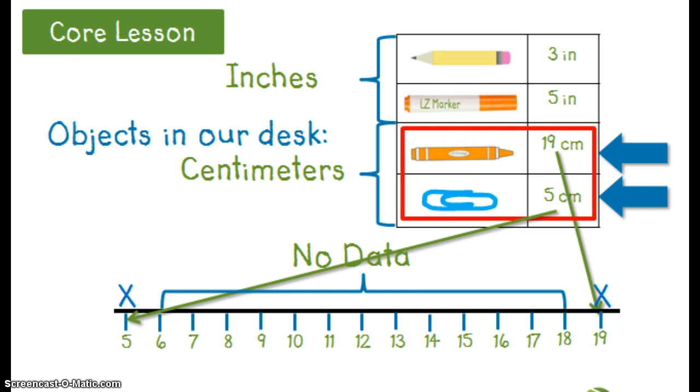On this number line, there are several measurements not plotted on our line plot. That's okay! If we had more data in our table, we would have more measurements to plot.